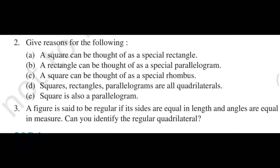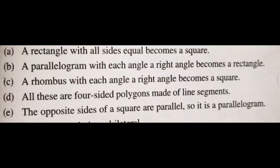Part C: a square can be thought of as a special rhombus. Why? The reason is: a rhombus with each angle as a right angle becomes a square. If all angles of a rhombus become 90 degrees, then it becomes a square.